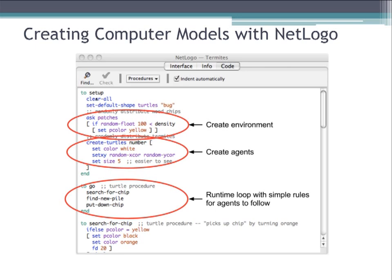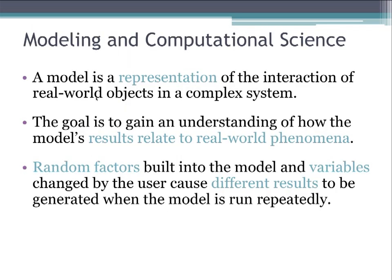Some things to keep in mind when you're modeling: a model is a representation of the interaction of real-world objects in a complex system. It is a representation, and it is not a real-world replica. The goal when modeling is to gain an understanding of how the model works and how its results relate to a real-world phenomenon. Often there are random factors built into a model, and variables changed by the user cause different results to be generated each time a model is run, giving us a landscape of outcomes. So rather than saying the outcome will always be A, we'll have probabilistic outcomes — for example, 30% of the time the outcome is A, whereas 70% of the time the outcome is B.